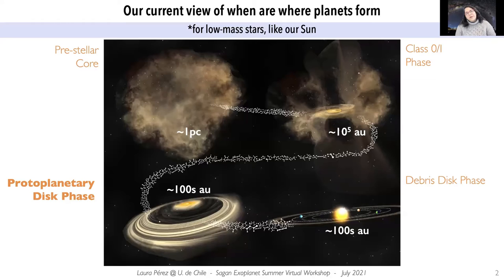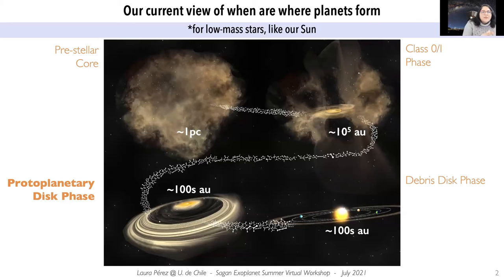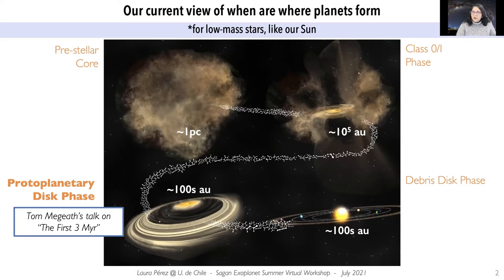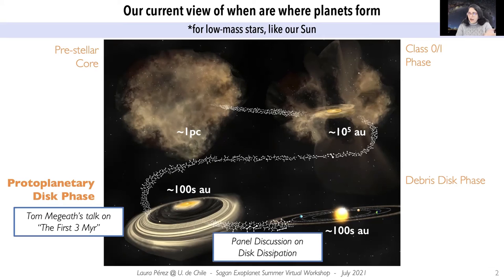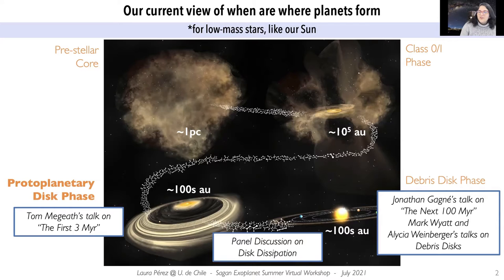To begin, here is our current view of when and where planets form. This is a cartoon of the process for low mass stars like our sun. I will be focusing on the protoplanetary disk phase, which comes after the early collapse in the pre-stellar core and the formation of the protostar and disk, the class 0/1 phase. It's really when the envelope has been dissipated that the action related to planet formation happens. Eventually the disk dissipates and we're left in the final debris disk phase.